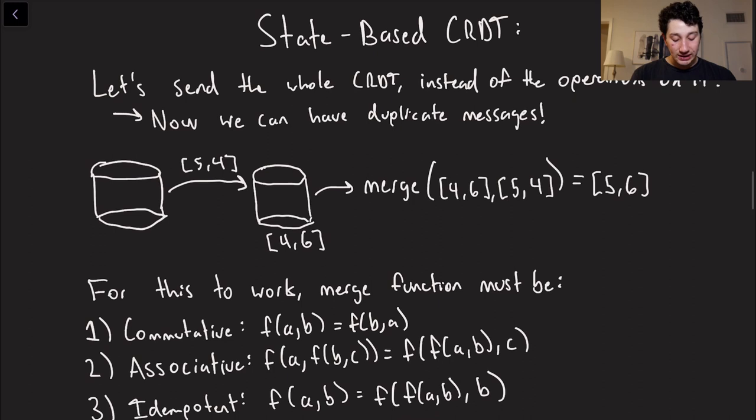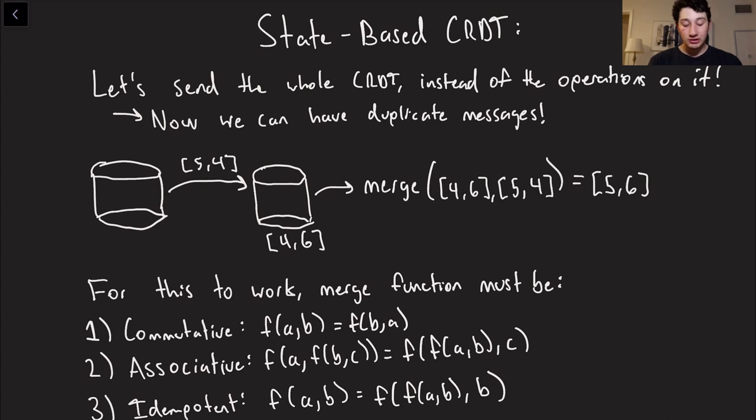On the other hand, we have our state-based CRDT. And I was already alluding to this before with sending the whole version vector or sending the whole counter in a distributed counter, but that's what I'm demonstrating here in this diagram. So let's say that this leader on the left has a state of 5,4, right? It's seen five increments to itself. It's seen four increments from the right leader. And it sends 5,4 to the second leader, right? Because we're sending the whole state of the CRDT instead of the operations.